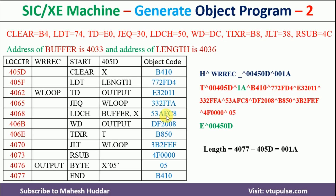Now, given the object code, we need to convert it into an object program. An object program contains three main sections: the header section, text section, and end section. The header section starts with H. The next six columns represent the program name — WRREC — written in the first five columns, with the sixth column empty. The next six columns represent the starting address: 00405D. The next six columns represent the program length: 4077 − 405D = 001A.